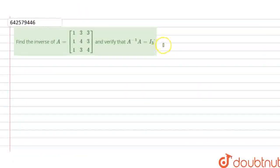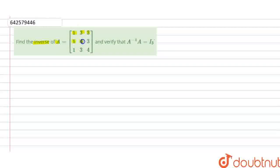Hello everyone, let's start with the question. The question says that: find the inverse of A equal to matrix of 1, 3, 3, 1, 4, 3, 1, 3, 4 and verify that A inverse into A is equal to I₃.